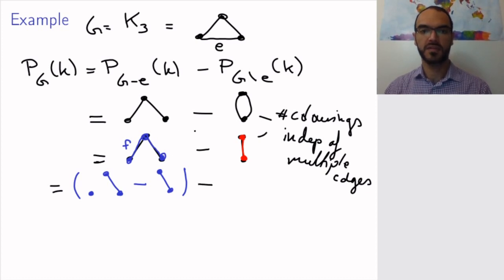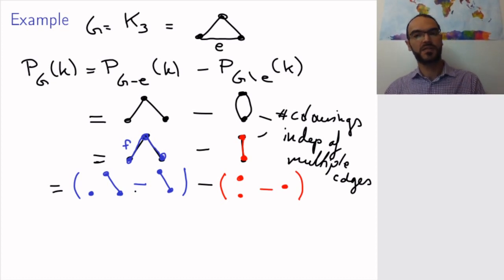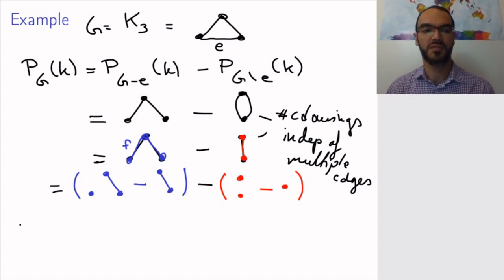And for my second one, if I remove the edge, I get this graph. And if I contract it, I get just this vertex. Obviously, these are simple enough graphs that I can see what their chromatic, what their P_G(k) is. But I want to go on until I really have a null graph to illustrate the point of the theorem.